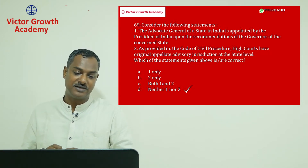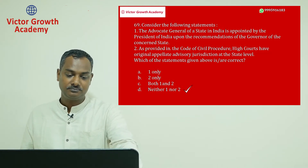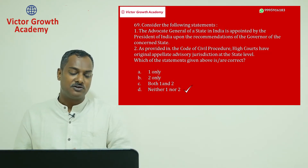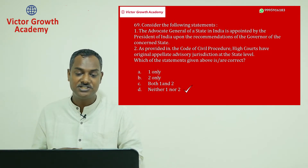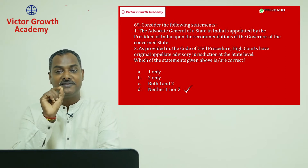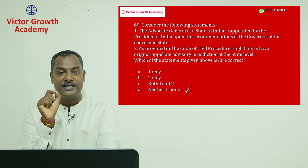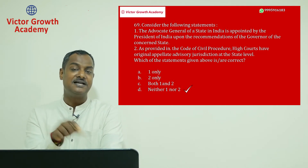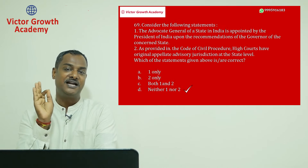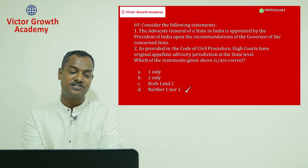Another statement says the High Court has original advisory jurisdiction at the state level — that is also wrong. As per the Code of Civil Procedure, only the Supreme Court under Article 143 has advisory jurisdiction to the President. The High Court does not have advisory jurisdiction. Both statements are wrong, so question number 69 answer is D.